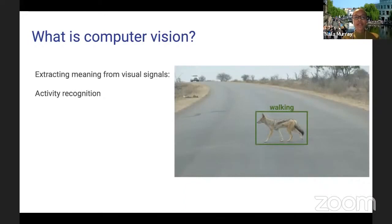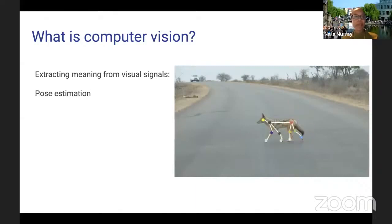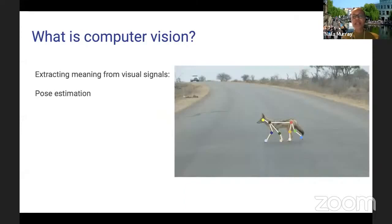You might also want to recognize certain activities happening in the image — for example, knowing whether a person with a jacket is walking or stationary. You might also want to estimate the pose of objects within the scene, knowing the relative locations of key body points.